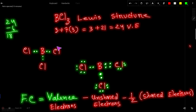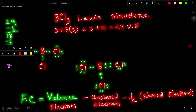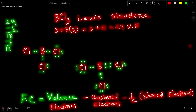Now let us satisfy the octet for the outer atoms first. To satisfy the octet for each chlorine atom, we need to put 6 more electrons on it, since it already has 2 from the bond. After filling the first chlorine we have 18 minus 6 = 12 valence electrons left. We then fill the second and third chlorine atoms, and after doing so we have used all the valence electrons — zero remaining.